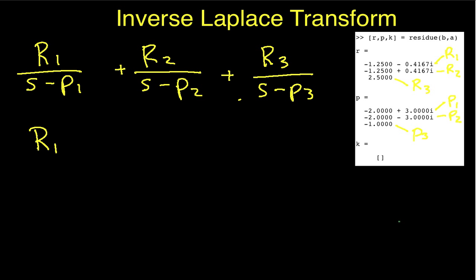You'll recall from the previous video, we defined R1 to be A plus jB. Okay? So, A in this case, looking at what I have for R1, A is going to be minus 1.25. B is going to be minus 0.4167.